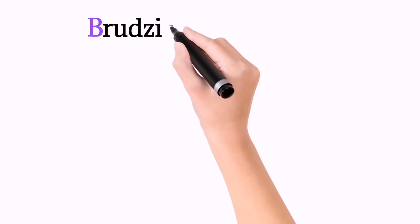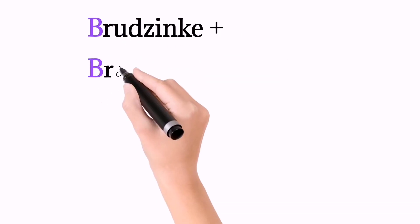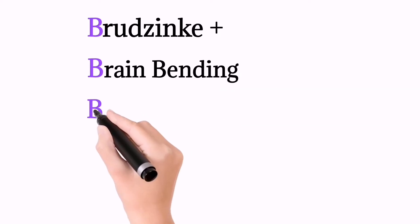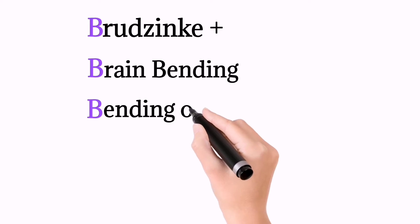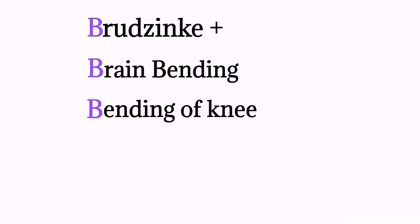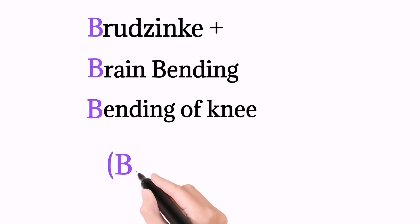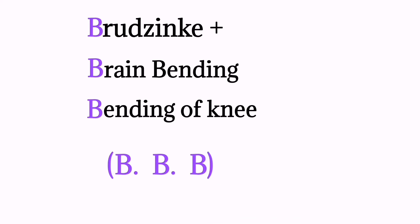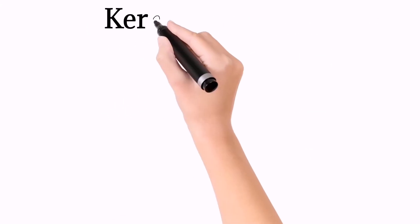Mnemonics to remember Brudzinski sign: Brudzinski is performed by brain bending — that is flexion of the neck — which leads to bending of the knee, that is flexion of the knee. So the mnemonic is BBB: Brudzinski sign, Brain Bending, and Bending of the knee.